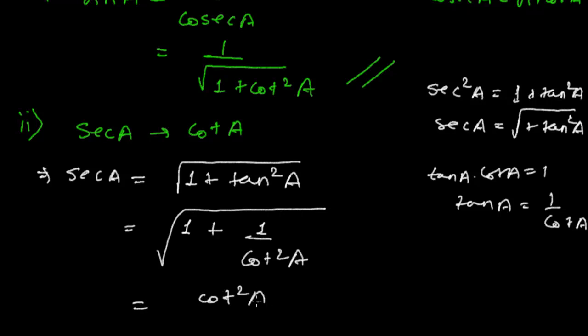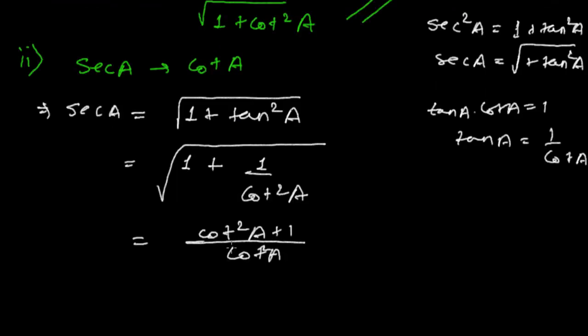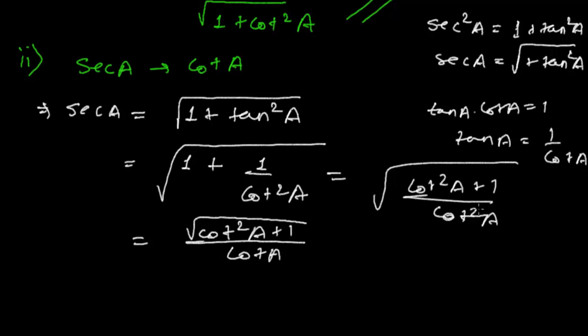cot square A plus one under root upon cot square A. It's actually simply cot, and since it is the square, it is just like, it will be cot square A plus one upon cot square A. And since this is the square it will come out so it will get like this.